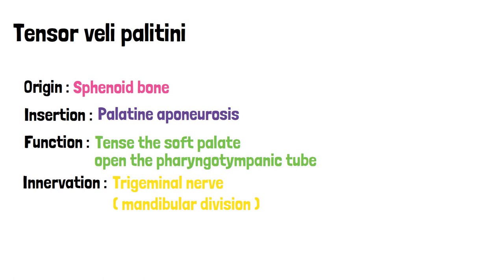It is innervated by the mandibular division of the trigeminal nerve. The rest of the four muscles of the soft palate are all innervated by the vagus nerve, except tensor veli palatini, which as stated is innervated by the mandibular division of the trigeminal nerve.